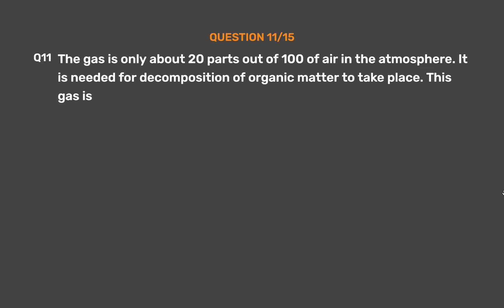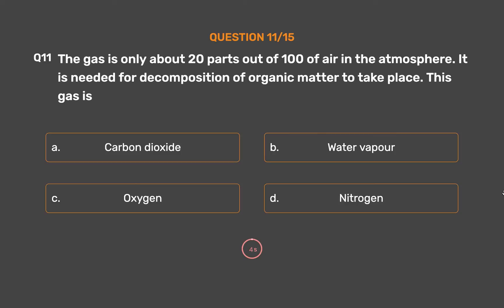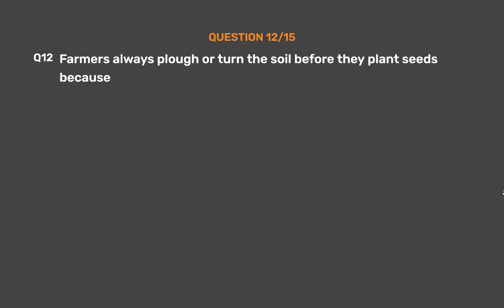Question number eleven: A gas is only about 20 parts out of 100 of air in the atmosphere. It is needed for decomposition of organic matter to take place. This gas is — option A: carbon dioxide, option B: water vapor, option C: oxygen, option D: nitrogen. The correct answer is option C: oxygen.